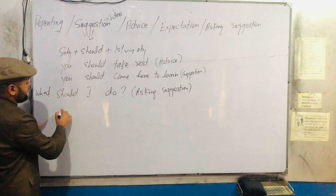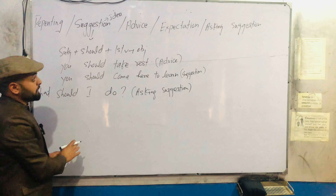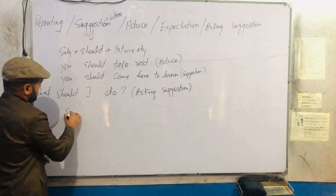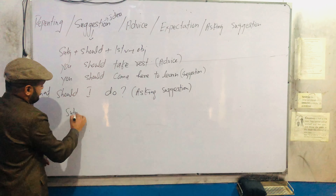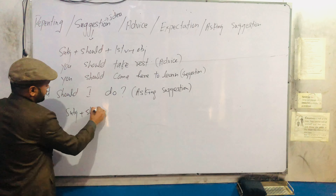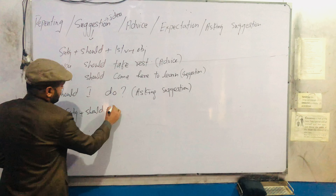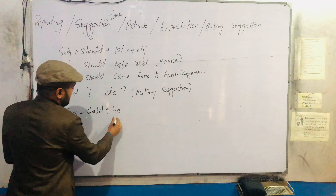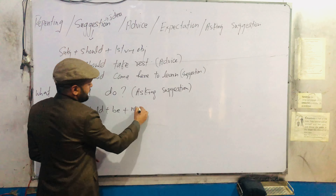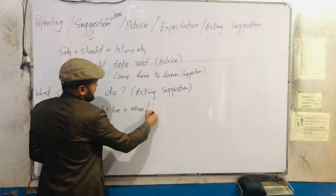Now coming to expectation. For expectation, the subject is followed by 'should'. For example: Subject + should + be + complement. So overall the structure remains the same but the meaning changes to expectation.